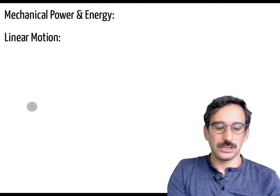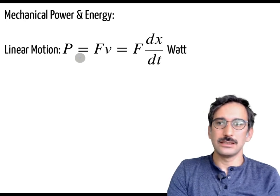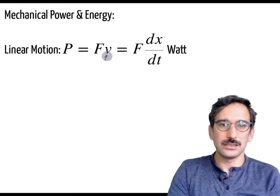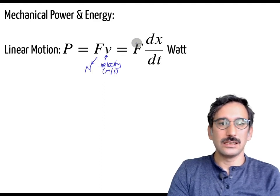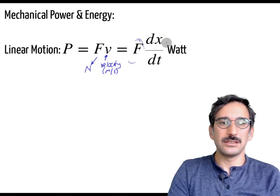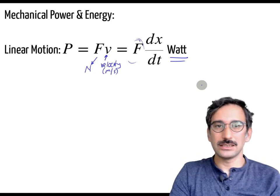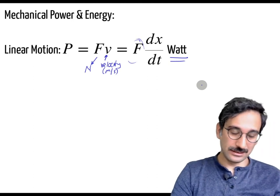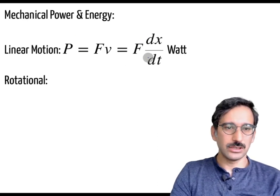In linear motion, the power (in watts) is equal to force times velocity, where velocity is in meters per second and force is in newtons. It can also be written as force times the derivative of position. If you integrate watts over time in seconds, you get watt-seconds, and one watt-second equals one joule.